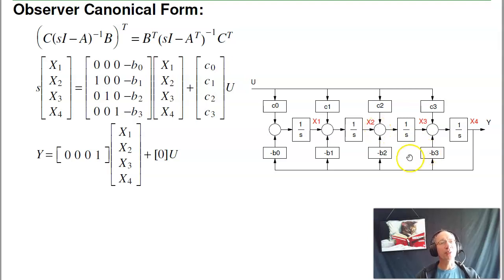This is called observer form, because if I take the output and its derivative, second derivative, third derivative, I can tell you what the states are. Just by looking at the output and its derivatives, I can tell you what the states are in the system.